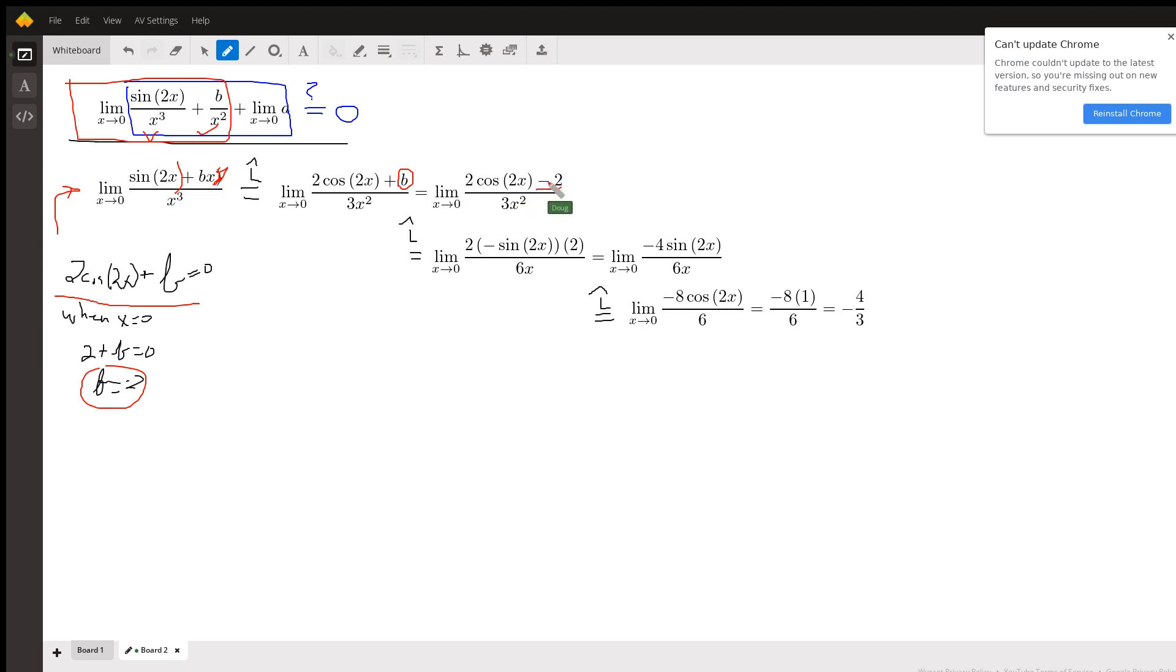If I try direct substitution, I now get zero over zero. So applying L'Hôpital's rule again, the derivative of this 2 cosine of 2x is here - I've shown all the pieces - which gives us -4 sine 2x over 6x. If I try direct substitution again, I get zero over zero.